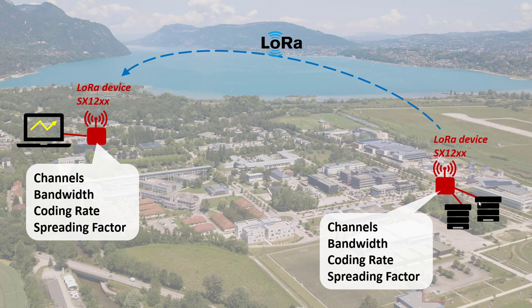You also need the same coding rate on both sides. The coding rate is a forward error correction factor: the higher the coding rate, the more bits you transmit, but also the higher the capacity to detect and even correct errors without retransmitting. Finally, there is one last parameter called the spreading factor, which must also be the same on both sides — I'll explain that on the next slide. The only regulation you must respect is the European 868 MHz band, specifically the 1% duty cycle.